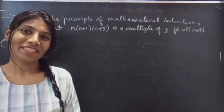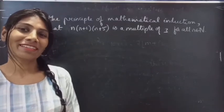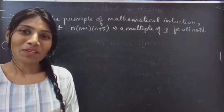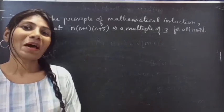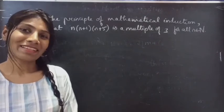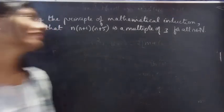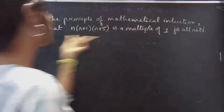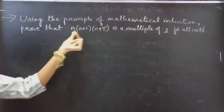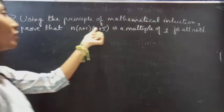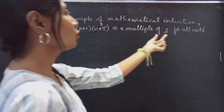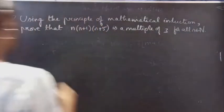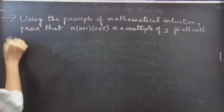Hello everyone, this is Jekatna here. In this video we are going to see a problem from mathematical induction. Problem: using the principle of mathematical induction, prove that n(n+1)(n+5) is a multiple of 3, for all n belonging to natural numbers.